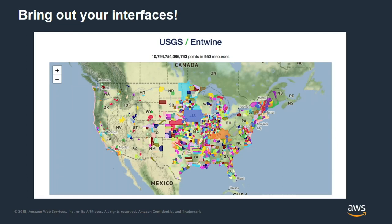This is work that HOBU did on top of the USGS LiDAR data. That number at the top is 11 billion points that were analyzed and put together — a whole bunch of LiDAR point cloud data over the US. The cool thing: USGS themselves said they had never been able to see all their data in a cohesive manner until this work was done. This is putting LiDAR into a cloud-optimized format, which is great since the government paid for it all.